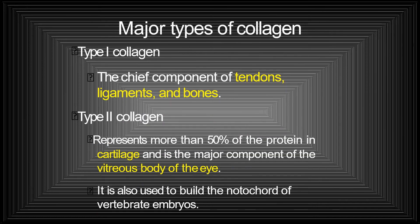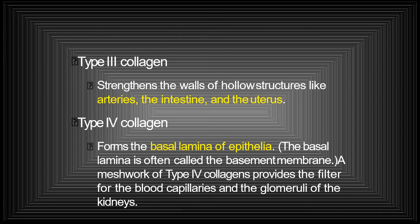The major types of collagen include: Type 1, which is the chief component of tendons, ligaments, and bones; Type 2, which represents more than 50% of the protein in cartilage, is the major component of the vitreous body of the eye, and is used to build the notochord of vertebrate embryos; Type 3, which strengthens the walls of hollow structures like arteries, intestine, and the uterus; and Type 4, which forms the basal lamina of epithelia and provides the filter for blood capillaries and glomeruli of the kidneys.